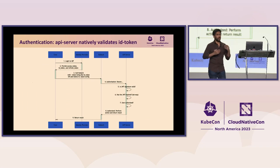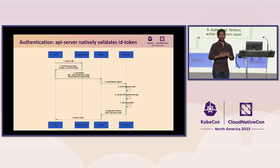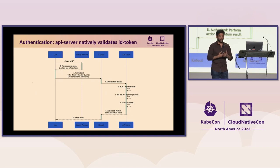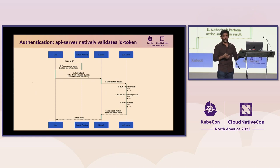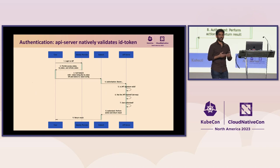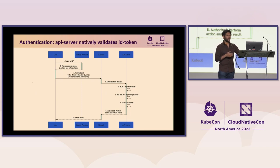Looking at the new data flow: the user logs into the IDP, which provides an ID token, refresh token, and access token. When the user makes kubectl calls, they present the ID token as a bearer token. The API server validates the JWT — JSON Web Token — in the ID token. This is possible because during bootstrapping, OIDC flags are provided so the API server sets up a handshake with the IDP and gets the relevant secrets to validate the JWT signature. Once it verifies the JWT is valid and not expired, it uses the groups in the claims to authorize the user.